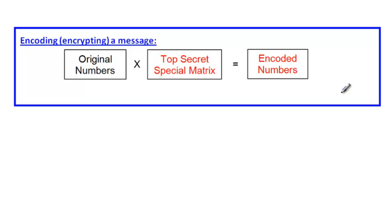Here's how we do it. You take the original numbers and multiply them by a top-secret special matrix — the encoding matrix. If you don't know what that special matrix is, this doesn't work at all. Usually we just make it up. When you multiply your original numbers by your special matrix, you get the encoded numbers.